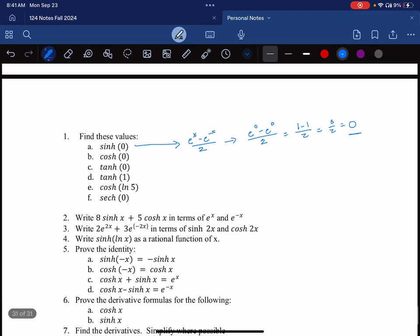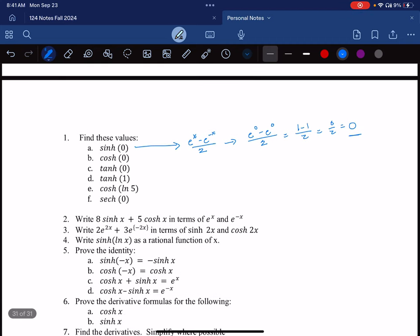And you would do the same for these other ones. Is that okay? So you'll just go back to fundamental definitions or to things that you already know. So like when you're calculating here, tanh of zero, you might just use these two values, sinh of zero and cosh of zero that you already established.